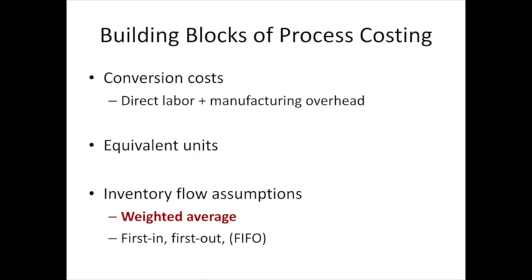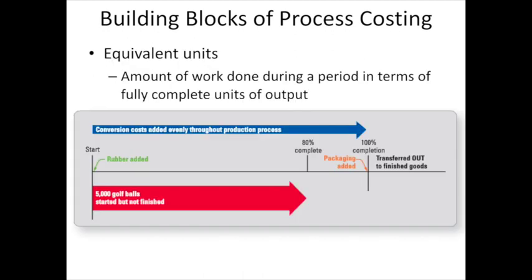So let's first look at the computation of equivalent units. Here I've given us a timeline to look at, and we can see that we're looking at golf balls. In process costing, we typically think of conversion costs as being added evenly throughout the process. As we can see here in blue, conversion costs are added evenly throughout this process from beginning until the product is 100% complete.